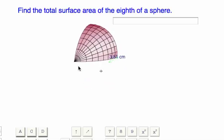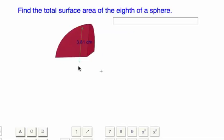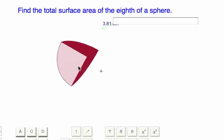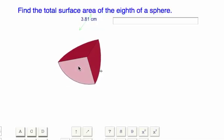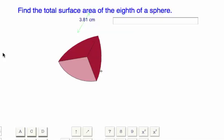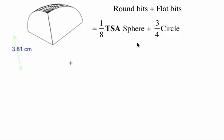Let me rotate it this way — there are three of them. We can see there's one, there's the other quarter, and then the other one is way down here. I'm just going to rotate it so we can see all three at the same time — three quarters of a circle. That's the flat bits and the round bits; we just have one eighth of the surface area of a sphere.